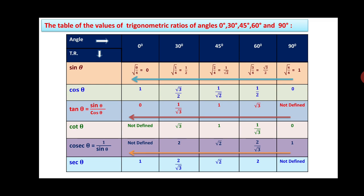Tan 0° = 0/1 = 0. Tan 30° = (1/2) / (√3/2) = 1/√3. Tan 45° = (1/√2) / (1/√2) = 1. Tan 60° = (√3/2) / (1/2) = √3. Tan 90° = 1/0, which is not defined. For the cot θ column, use the same reverse-order trick as cos from tan: values are not defined, √3, 1, 1/√3, and 0.